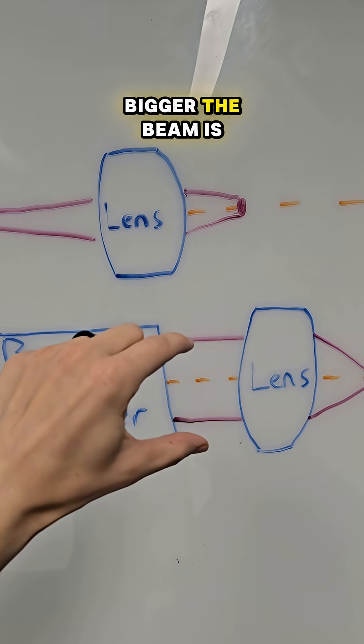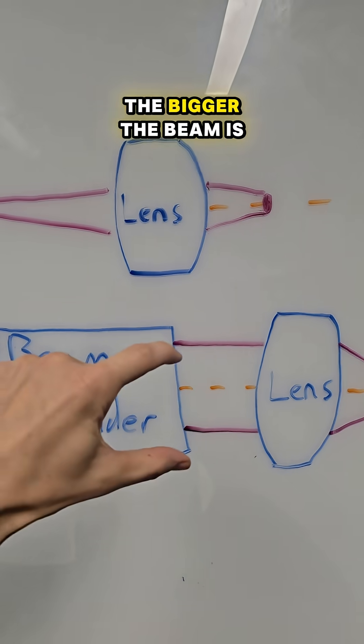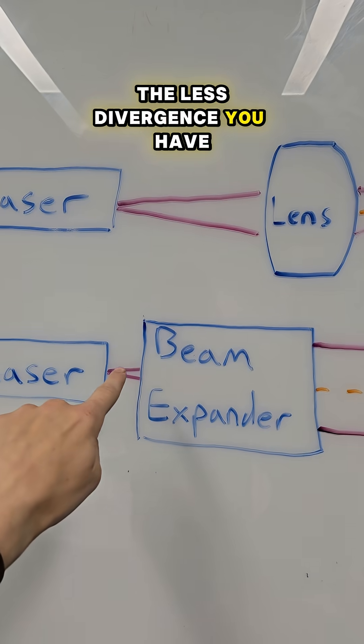Counterintuitively, the bigger the beam is, the smaller the focus spot you can make. The bigger the beam is, the less divergence you have.